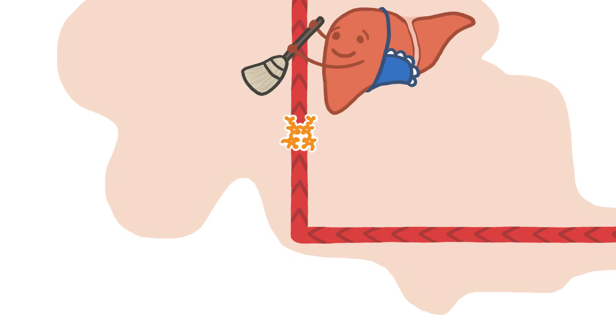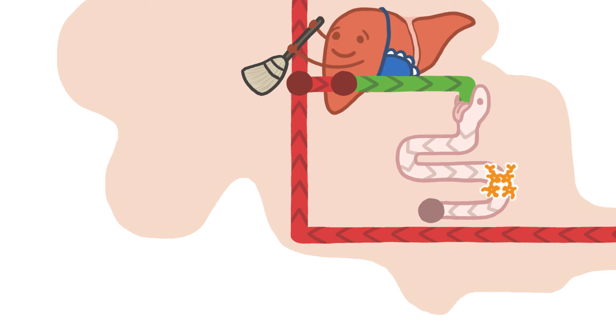The liver tries to clean bilirubin from the bloodstream by sweeping it into the intestines. But unfortunately, the intestines mistake it for food and push it right back into the bloodstream. In other words, left to their own devices, our bodies send bilirubin on an infinite loop and never actually get rid of it.